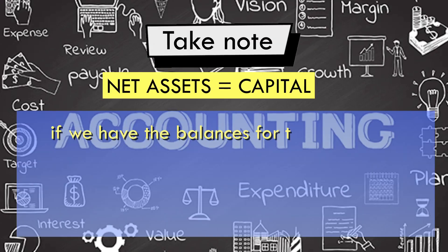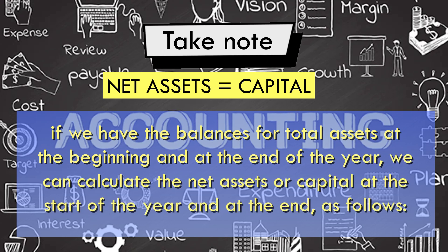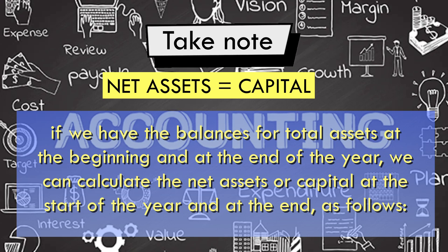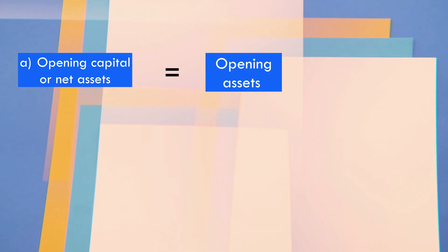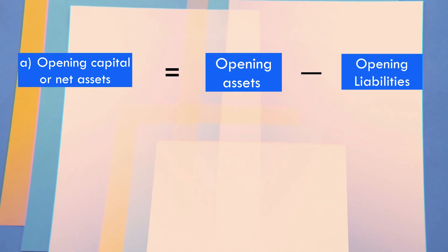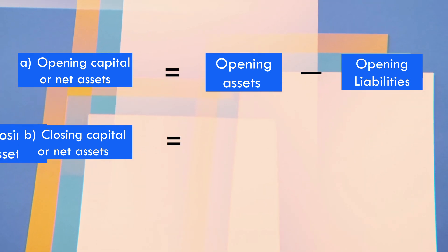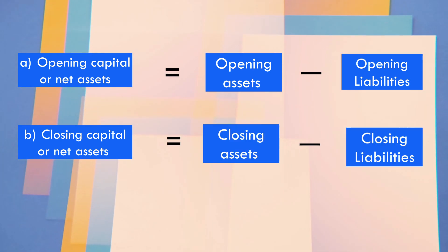Take note of the fact that net assets equal capital. If we have balances for the total assets at the beginning and at the end of the year, we can calculate net assets or capital as follows: opening capital or net assets equals opening assets minus opening liabilities; closing capital or net assets equals closing assets minus closing liabilities.